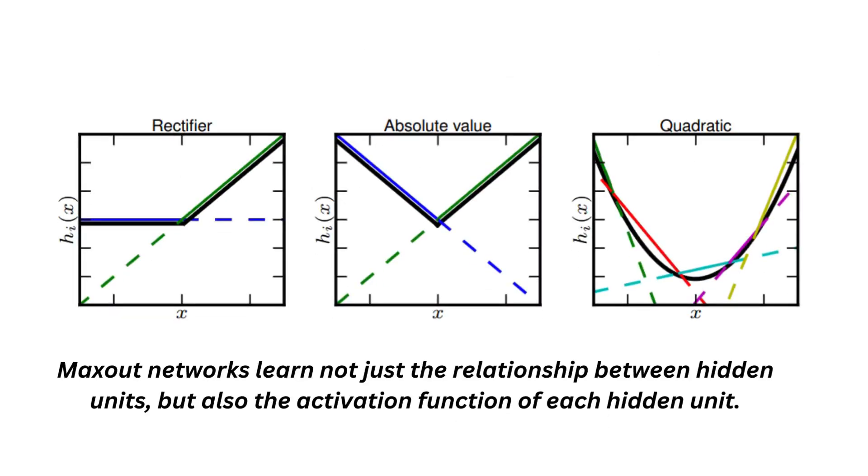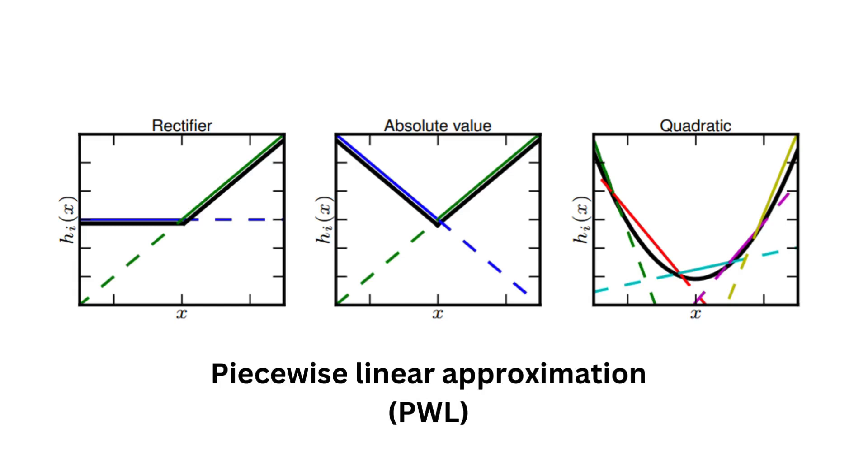A very interesting point about maxout network is that they are learning which activation function they should be using within each of the units. How they achieve this is by it being effectively a piecewise linear approximation function. This means a function made of few linear functions across its domain. Let's check out how maxout can create the rectifier, the absolute value, and the quadratic activation function.